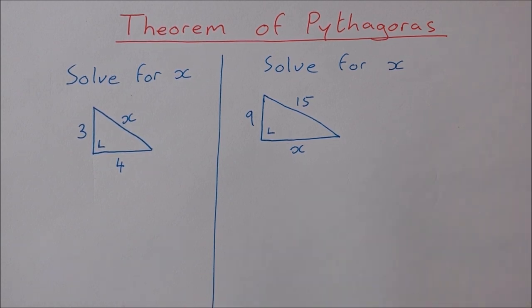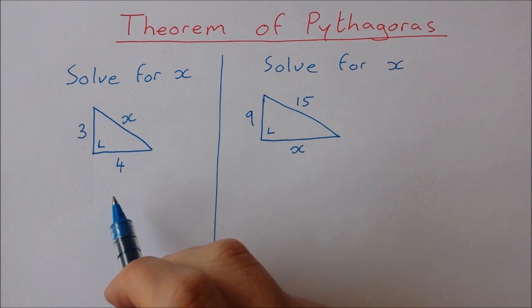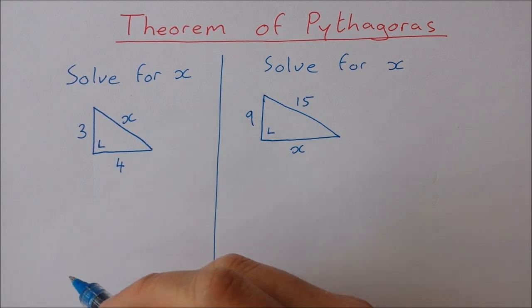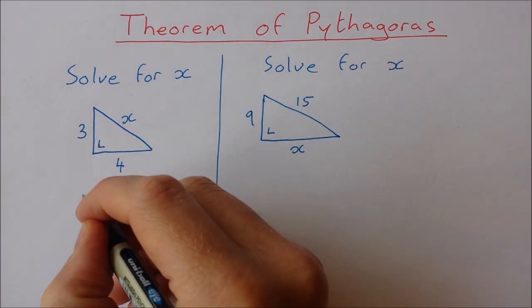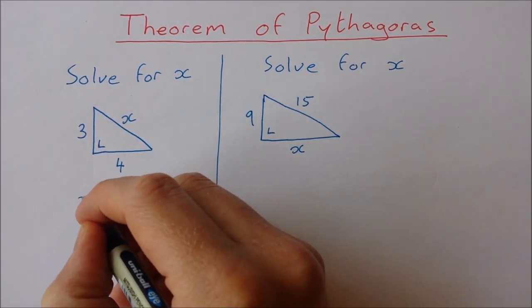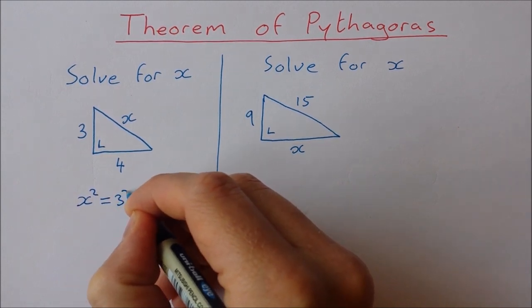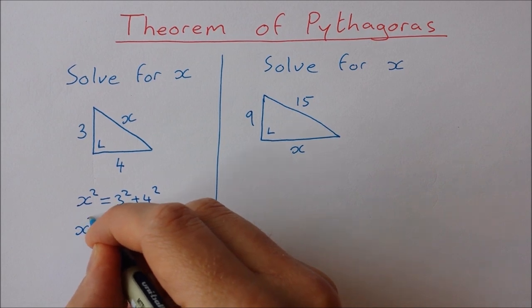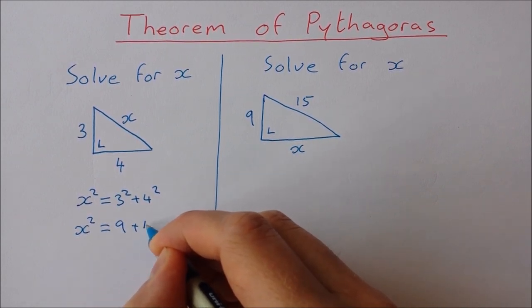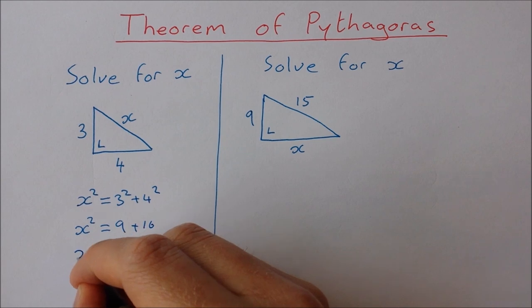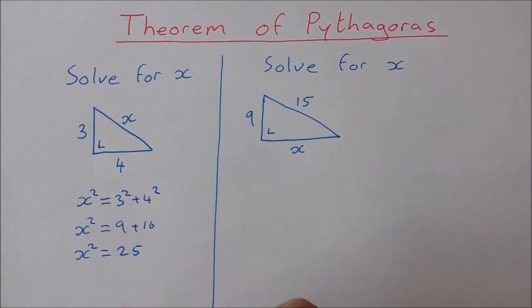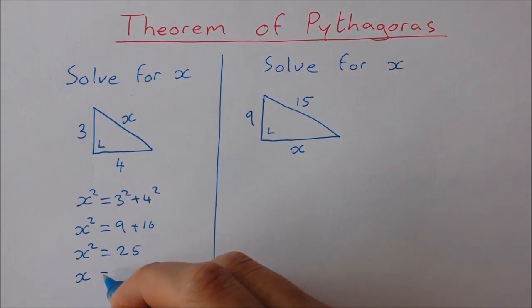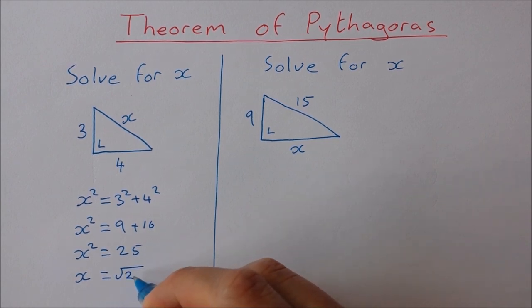So on the left here solve for x. We have 3, 4, and we have x. Now some of you may recognize this as a Pythagorean triple straightaway but we'll work through it and see what we get. So the hypotenuse squared x squared is equal to 3 squared plus 4 squared. So x squared is equal to 9 plus 16. x squared is equal to 25. x is equal to the square root of 25. So x is equal to 5.